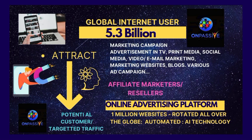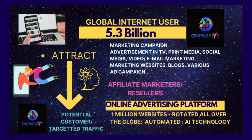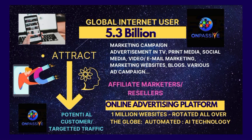The first step in the 5-step process is attraction, which is the most important. OnPassive marketing campaigns use various advertisements in print media, social media, OnPassive websites, OnPassive YouTube channels, O-Media initiatives, video email marketing, marketing websites, blogs, and various ad campaigns. We attract people, and these attracted people are potential customers — they are the targeted traffic, meaning they are interested in the OnPassive platform and products to satisfy their needs.